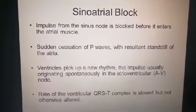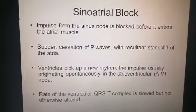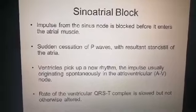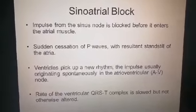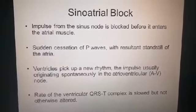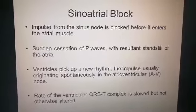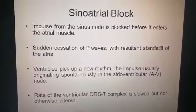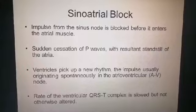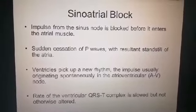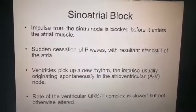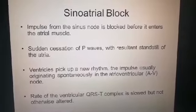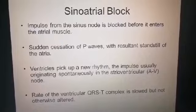The rate of the ventricular QRS and T complex is slowed because the conduction speed of the AV node is less than that of the SA node. There is no formation of the P wave because there is no atrial contraction. However, there is formation of the QRS and T complex because there is depolarization and repolarization of the ventricles — the QRS and T complex is slowed down but not otherwise altered.